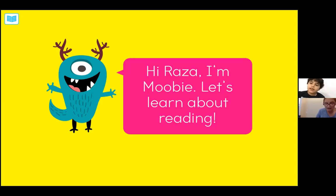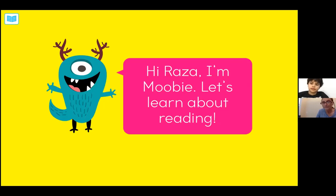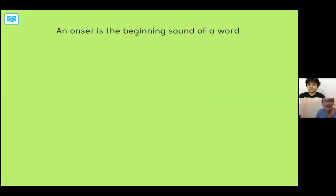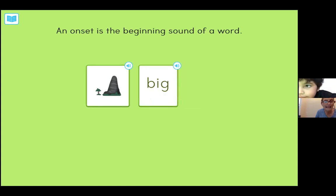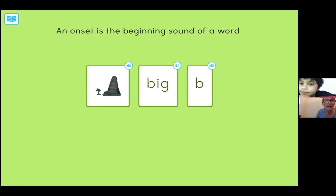Hey, Raza. Good to see you again. We're going to go ahead with our next session and what we're going to do here is learn about two new words. One is called onset, and that's like the beginning of a word. An onset would be like the B in the word bat, or the B in the word big. So that's what an onset is — it's the beginning sound of a word.